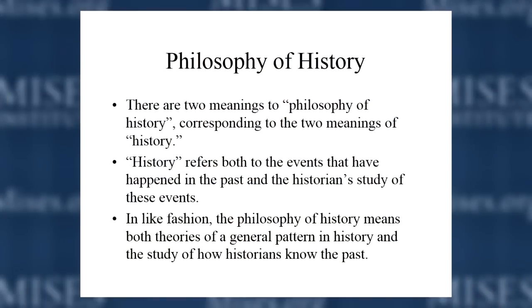Now, when we talk about philosophy of history, we can use the term to mean two different subject matters corresponding to two different meanings of history. History can refer either to the events that happened in the past — say, history of the Civil War or history of the fall of the Roman Republic — but history could also refer to the process of writing about these past events.